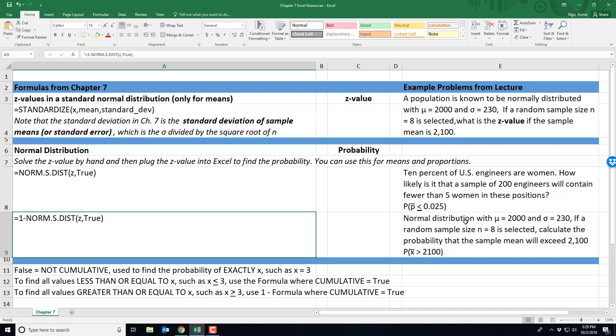So here on the right are the two examples in the lecture. If we look at this example here, this one was for the means. We were given a normal distribution with a mean of 2000 and a standard deviation of 230.